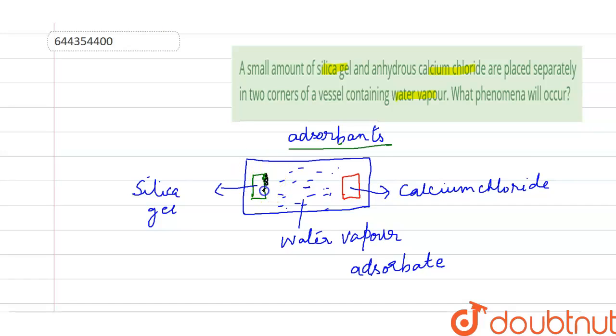They get stuck on the surface of silica gel and also on the surface of anhydrous calcium chloride. That means water vapor is moving this side, so the water vapor molecules are accumulated.